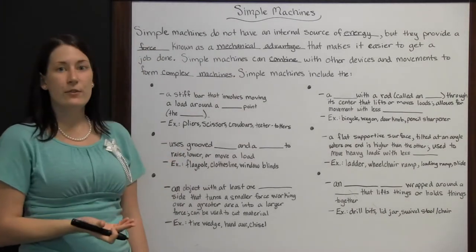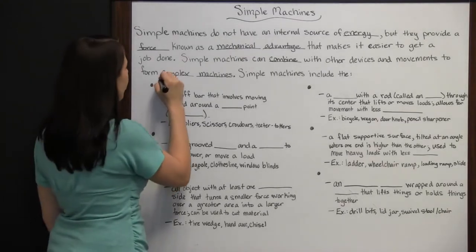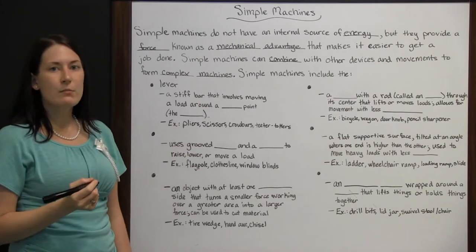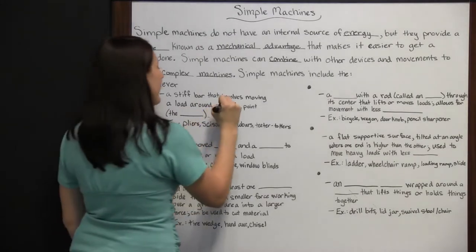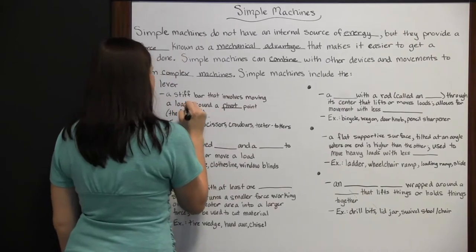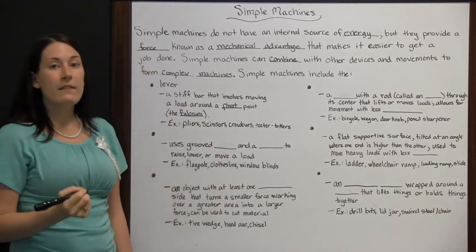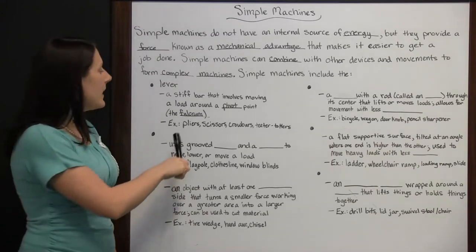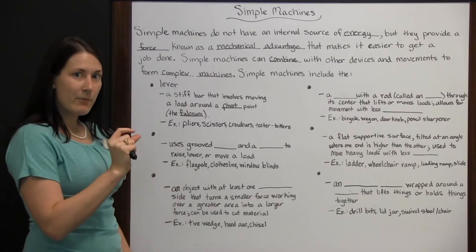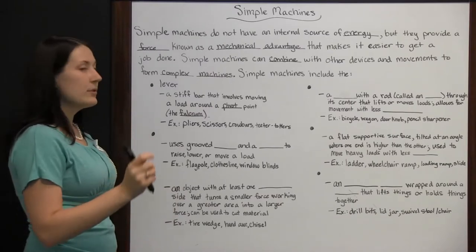Simple machines include the lever. The lever is a stiff bar that involves moving a load around a pivot point. This pivot point is known as the fulcrum. To give you an idea of what a lever is as a simple machine, it will be pliers. It has two levers working around that pivot point in the middle to be able to do a job easier.